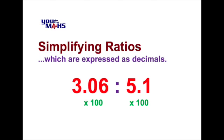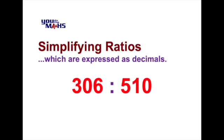So by shifting the decimal point two places to the right 3.06 becomes 306. 5.1 starts with multiplying by 10 to become 51 and then multiplying by 10 again makes it 510.